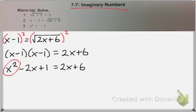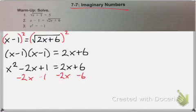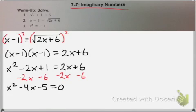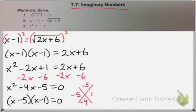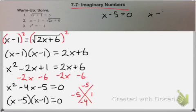And remember, if you have an equation with an x squared in it, this is when you have to set your equation equal to 0 and factor. So I'm going to subtract 2x and subtract 6 from both sides. And this is a magic x problem. You need to take each factor separately and set it equal to 0. So I get x equals 5 and x equals negative 1.